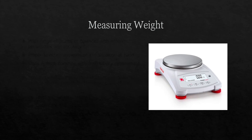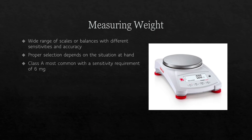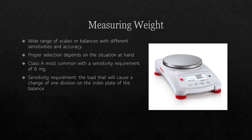Before we begin, I'd like to give you a brief introduction on measuring weight in pharmacy. In the pharmacy setting, there is a wide range of scales or balances with different sensitivities and accuracy being used. Proper selection of your scale depends on the situation at hand. Class A scales are the most commonly used, with a sensitivity requirement of 6 mg. The sensitivity requirement is defined as the load that will cause a change of one division on the index plate of the balance — that is, the amount of weight that will cause the plate of the balance to change by one division.